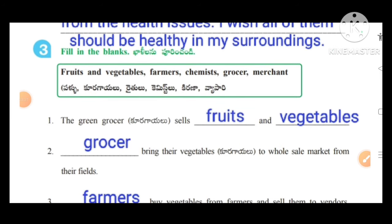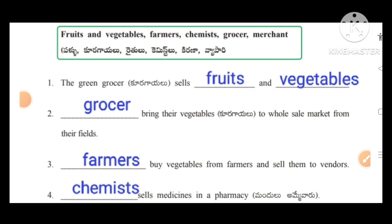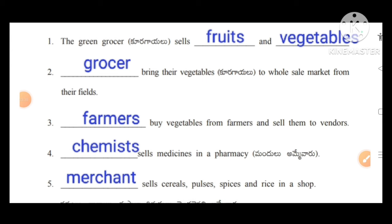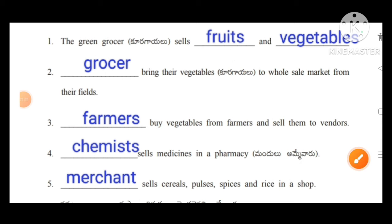Fill in the blanks. Some keywords are given in the help box. First: the green grocer sells fruits and vegetables. Grocers bring their vegetables to the wholesale market from their fields. Farmers sell them to vendors. Chemists sell medicines in a pharmacy. A merchant sells cereals, pulses, spices, and rice in a shop.